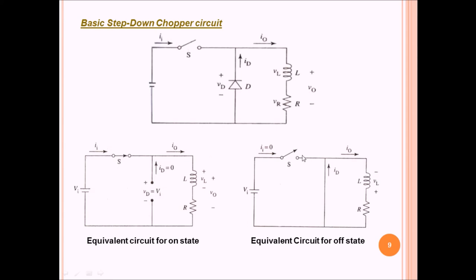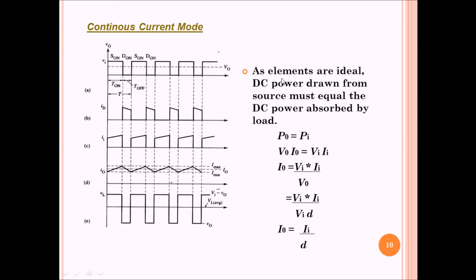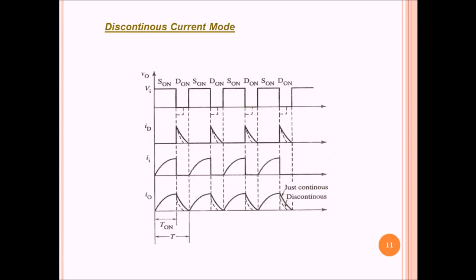Now in the second case when the thyristor is made off, this diode will work as a short circuit because the potential is here more than this point potential. The current will flow in this direction. This power will be supplied by the inductor which has stored the energy during the charging time. There are two modes in which this can supply: continuous current mode and discontinuous current mode.